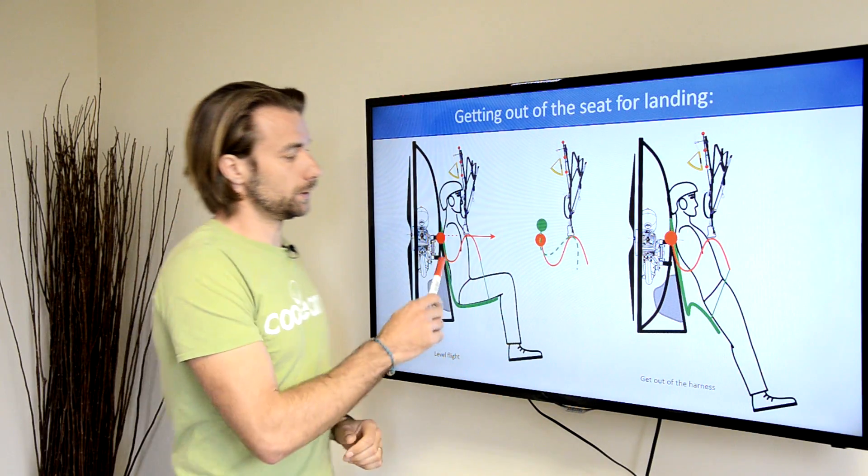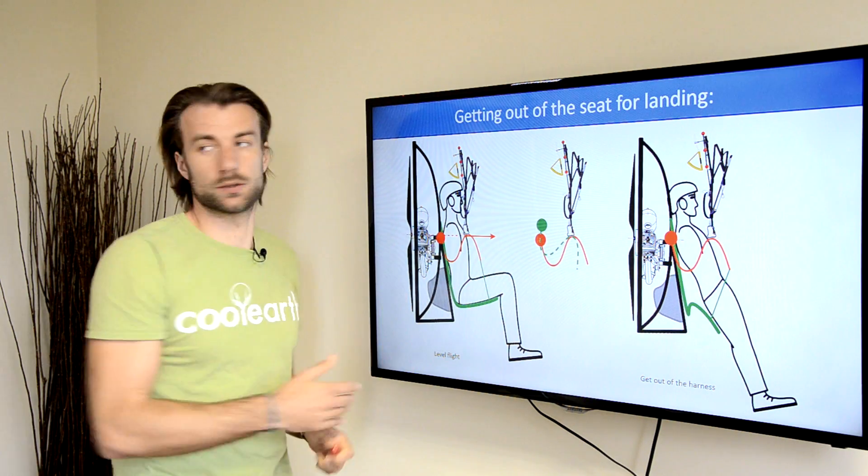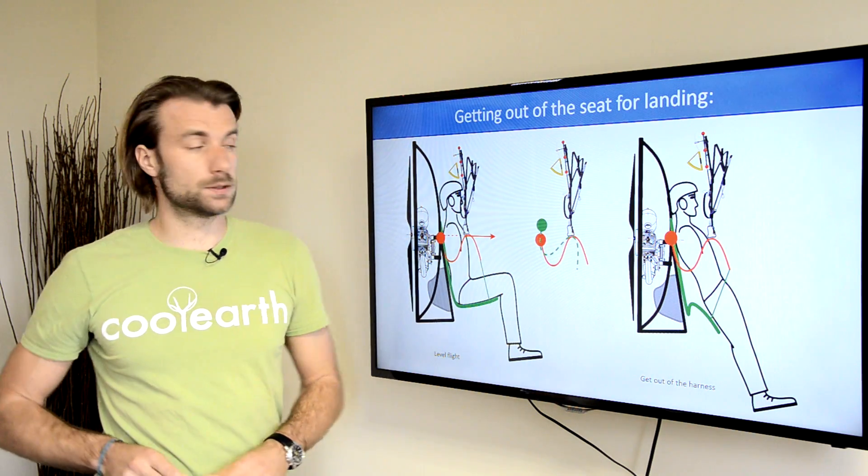Maybe you would expect that when you press your legs down, you press the seat board down, that the bar will move down, but it's not that way.